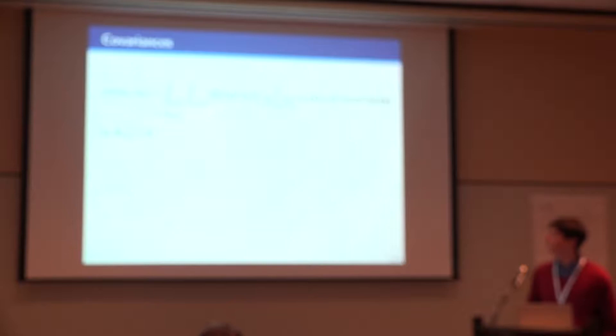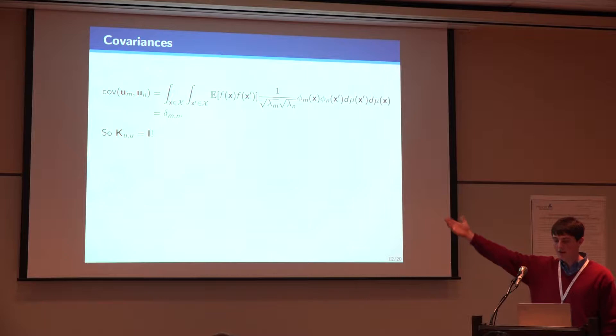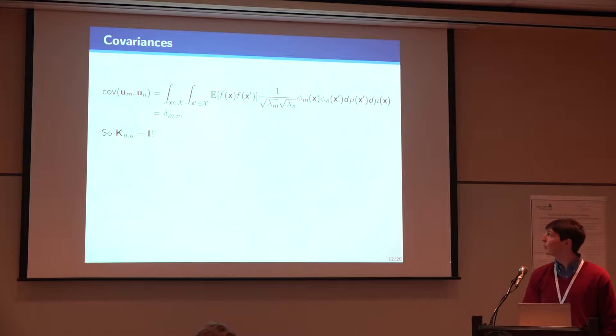The first one is relatively straightforward. We write out the double integral, which is the covariance. And that expected value is just, we recognize it's a kernel. We use the fact that these are eigenfunctions of the kernel with respect to its measure mu. And then we use the orthogonality of eigenfunctions. And then we just get that that's always either 1 or 0, and we have the identity matrix as promised.